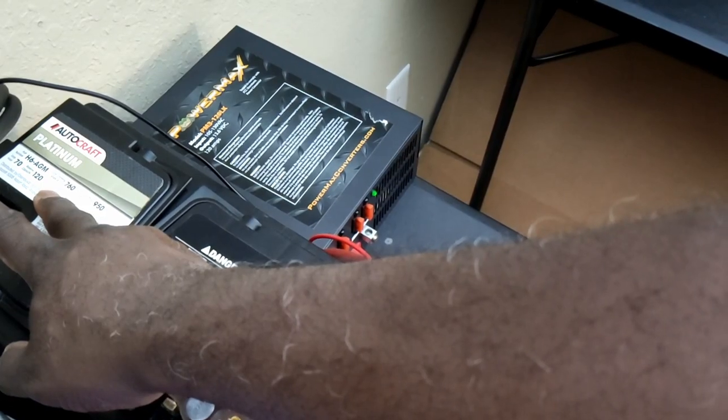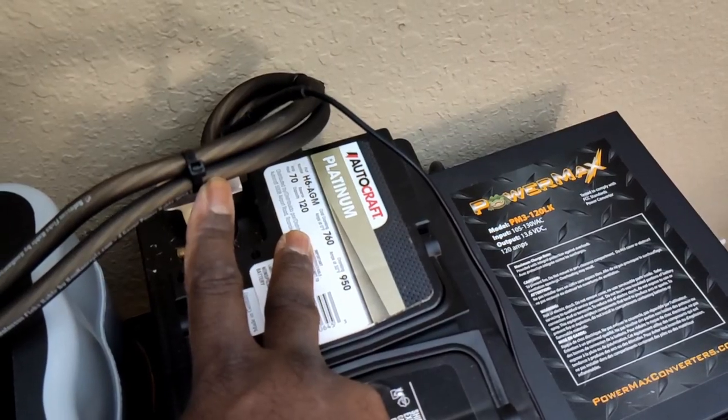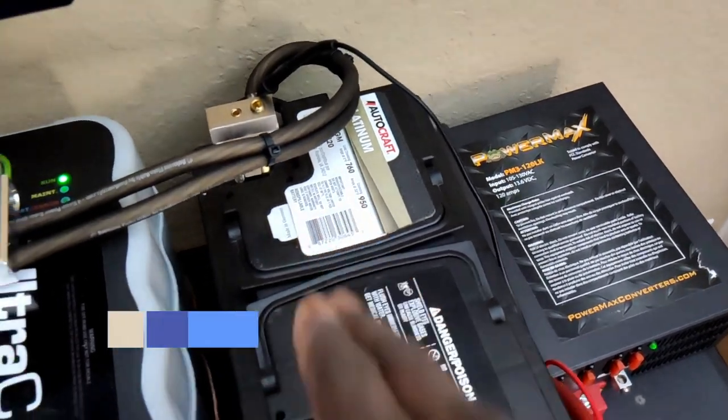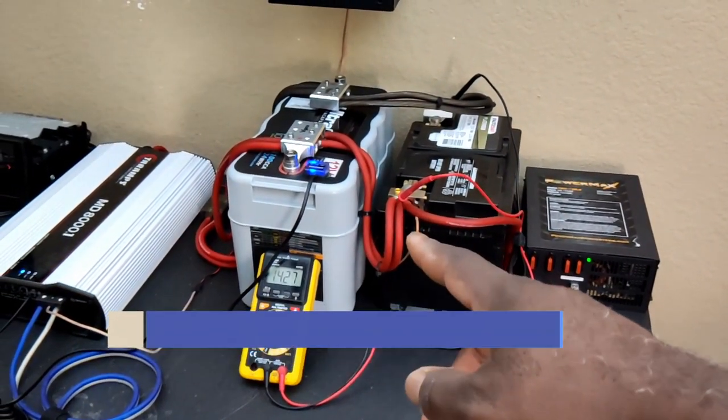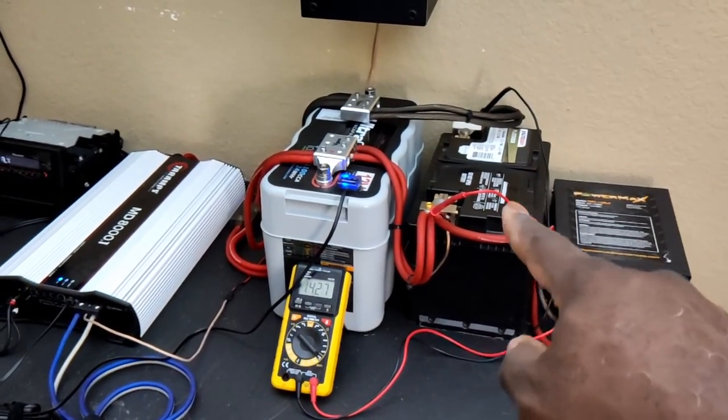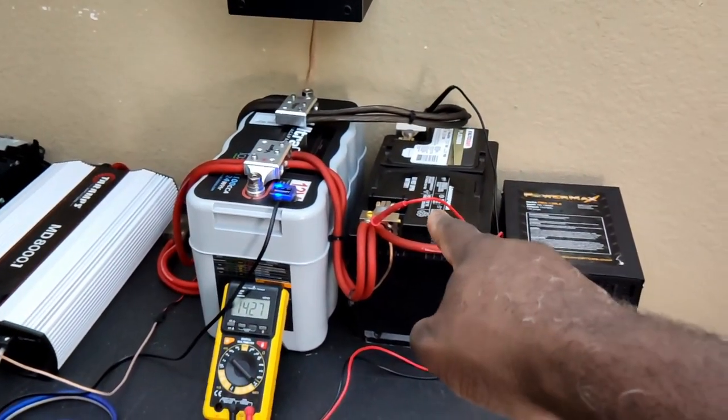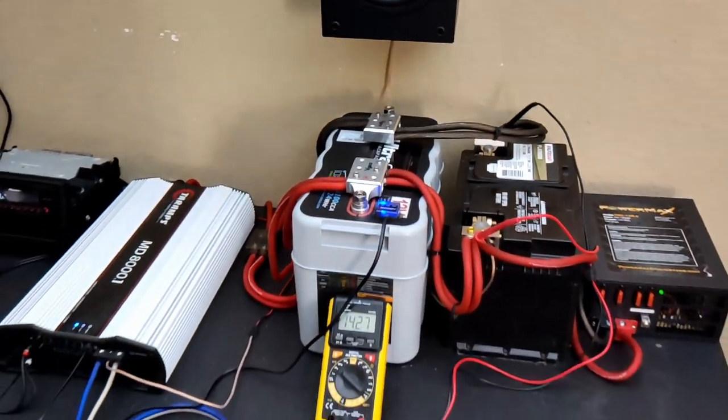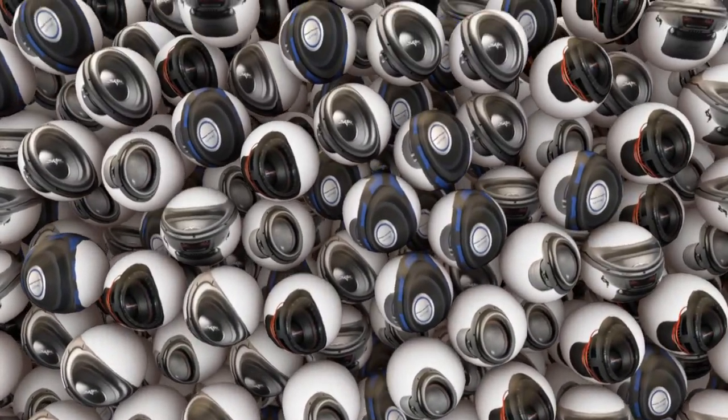But I go by the stats. This thing here is 70 amp hour, 120 reserve capacity, 760 cold cranking amperes, 950 cranking amperes. This will get your job done if you wanted to use it as a starting battery. But just know that once this thing gives you 950 amperes, it's going to drop the voltage so low. You're going to need another one to compensate for that if you're having voltage drops. And I'm going to show you in this video why you get voltage drops.